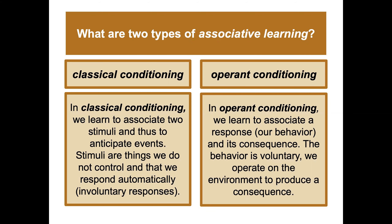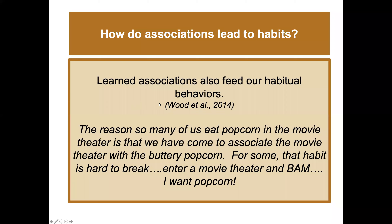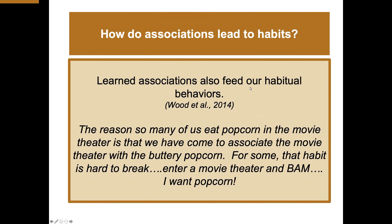The behavior in operant conditioning is voluntary — we choose it ourselves and operate on the environment to produce a consequence. Learned associations also feed our habitual behavior, which can be good or bad. For example, the reason so many of us eat popcorn at the movie theater is that we've come to associate the movie theater with buttery popcorn. For some people, walking into a movie theater automatically triggers 'I want popcorn.'